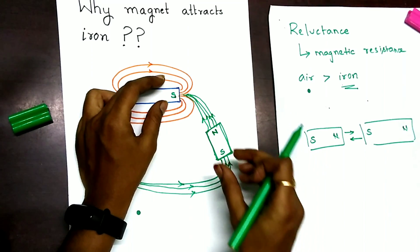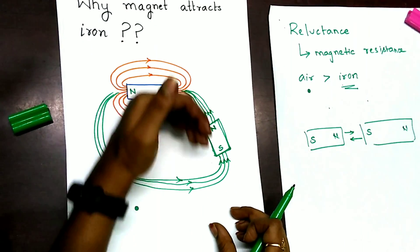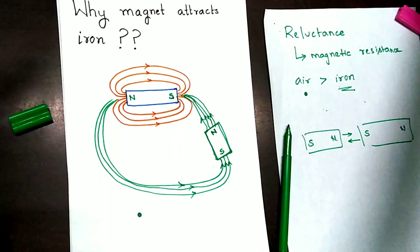And if this iron piece is placed farther away, then the force of attraction will be less. So, this explains why any piece of soft iron placed near a magnet is always attracted to it.